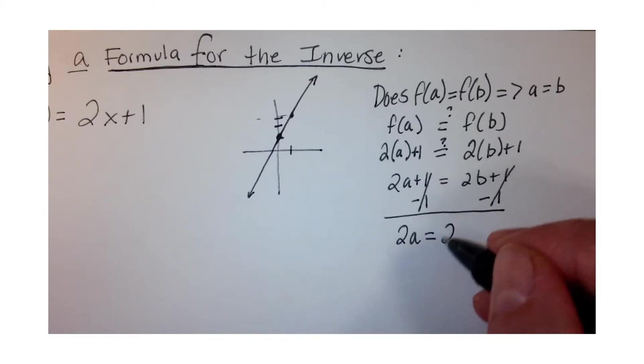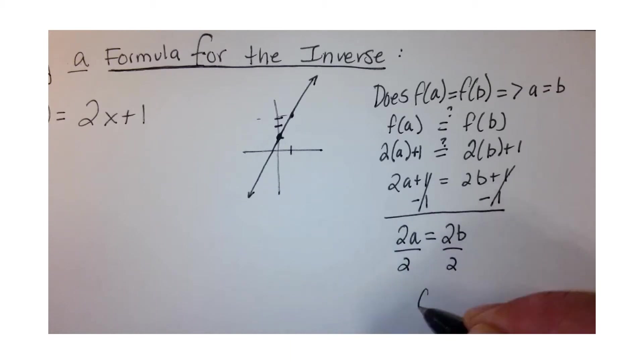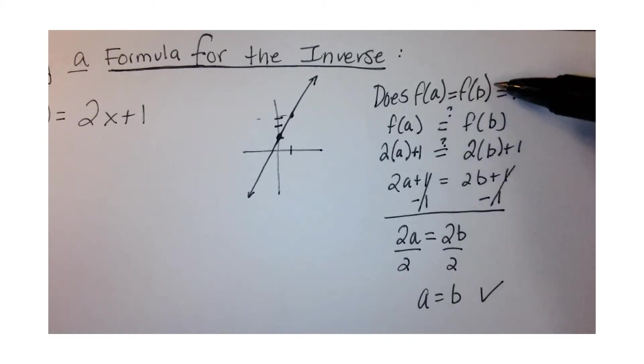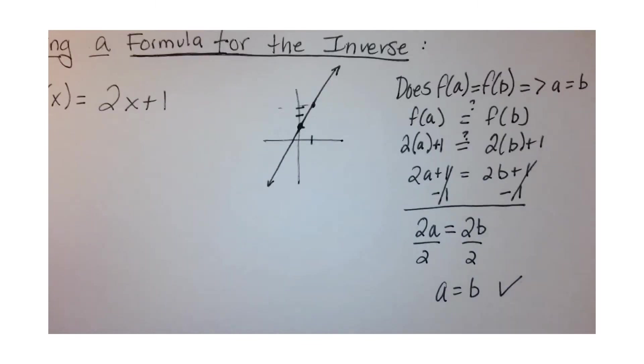So 2a equals 2b, and then divide by 2, so we get a equals b. We can see, yes, this does make a one-to-one function because f(a) equals f(b) gives us the result of a equals b. So this is one-to-one.